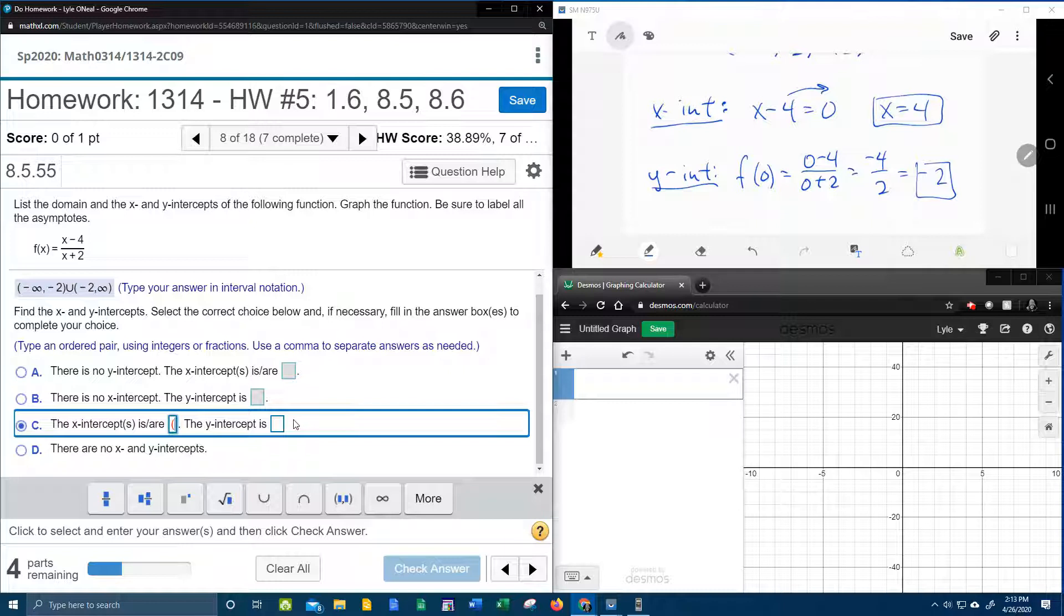As an ordered pair, the x intercept is 4 comma 0, and the y intercept is 0 comma negative 2. So don't forget that an x intercept has a y coordinate of 0 every time, and a y intercept has an x coordinate of 0 every time.